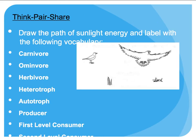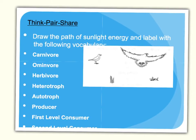For the image shown, draw a path to show the transfer of energy from one step to the next. Also label the following categories: carnivore, omnivore, herbivore, heterotroph, autotroph, producer, first-level consumer, second-level consumer, and third-level consumer. Go ahead and pause the video, take a moment to do this, then play the video when you're ready to continue.